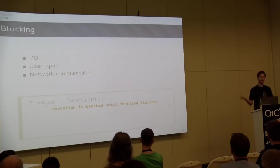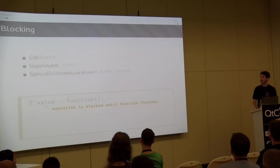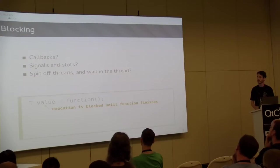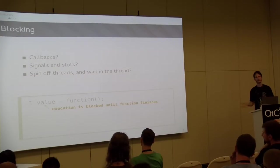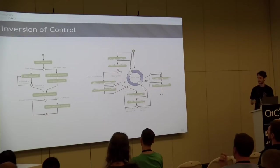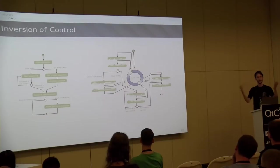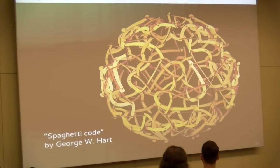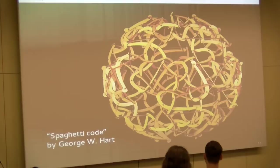Instead of having a function which returns an actual value, what is a future? We usually deal with slow operations using callbacks, signal-slots, and creating a new thread to do the actual work. But our code starts looking really crappy - instead of having a normal flow of logic, you have to split every single thing into a call and callback, call and callback. You end up with something like spaghetti code by George Hart, and this is actually how a lot of Qt projects really look.